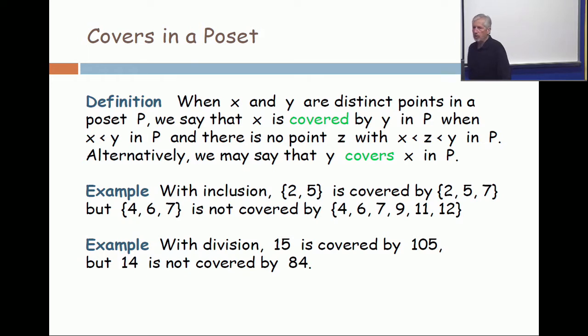Let's go back to our first two examples and make sure we understand covers. So if you have a family of sets and it includes (2,5) and (2,5,7), then (2,5) is definitely less than (2,5,7). It's less than because it's not the same, but it's a subset. But it's covered by it. There is no way to put a third set in between them.